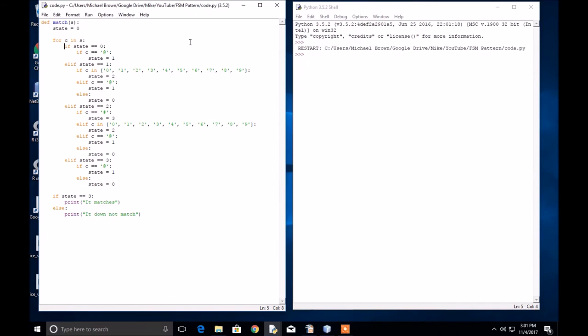If you're in state zero and the next character is an @ sign, you move to state one. If you're in state one and the next character is a digit, you move to state two. If it is an @ sign, you move to state one. If it's anything else, you go back to state zero.